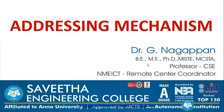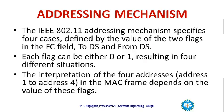Let us see something about addressing mechanisms being used in MAC frames. IEEE 802.11 addressing mechanism specifies four cases, defined by the value of two flags in the FC field: ToDS and FromDS. Each flag can be either 0 or 1, resulting in four different situations. The interpretation of the four addresses — address 1 to address 4 — in the MAC frame depends on the values of these flags.